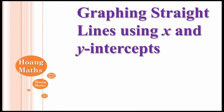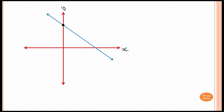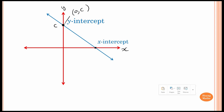Please download or print out the PDF file in the description below so you can work with me. This line cuts the y-axis at this point here, so this is called the y-intercept. Let's say this point cuts the y-axis at c. To write it in point form, we write it as (0, c), because along the y-axis x is always equal to zero. And this line cuts through the x-axis, so this is called the x-intercept. Let's say this line cuts through x at value k.